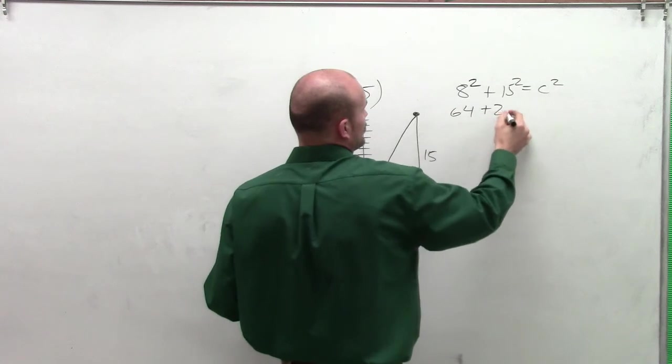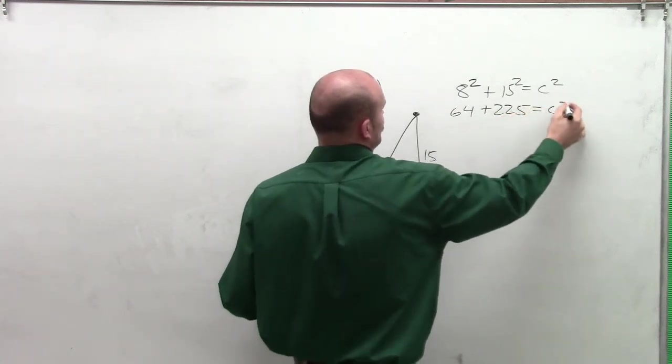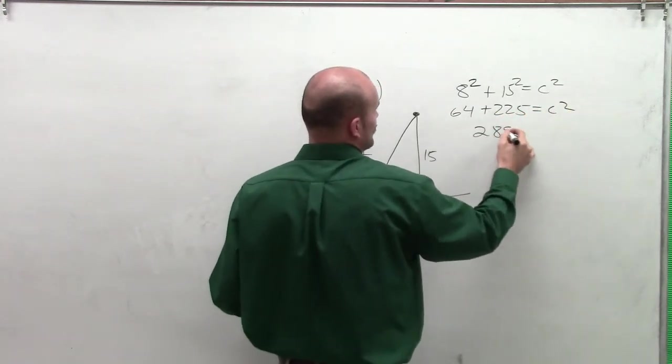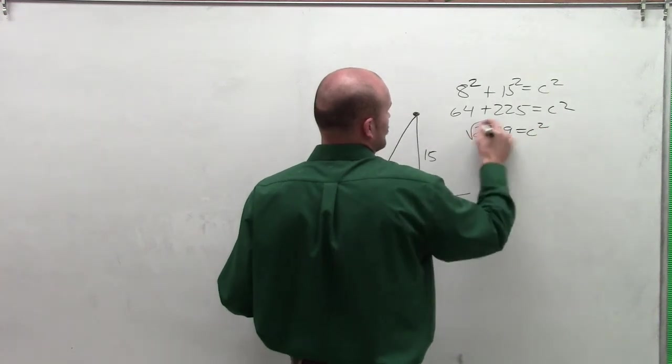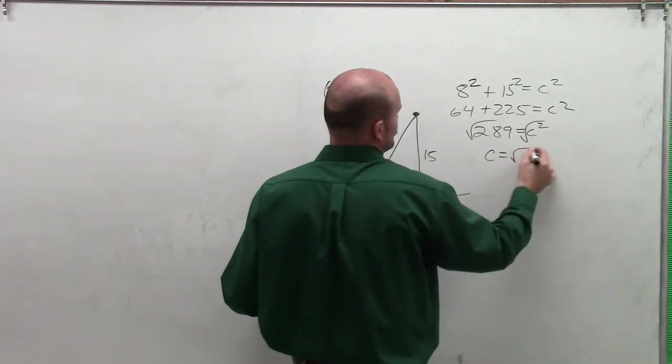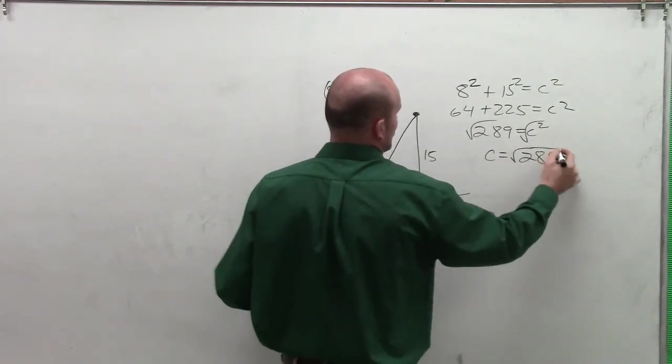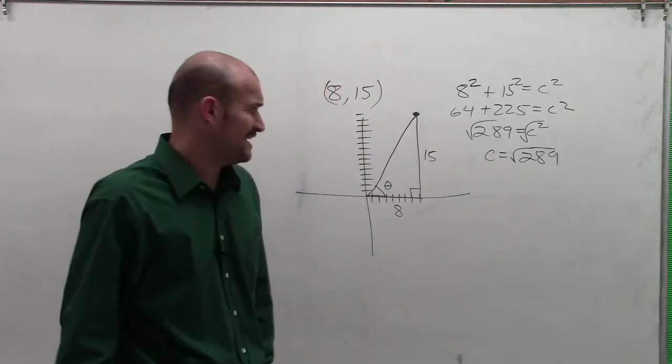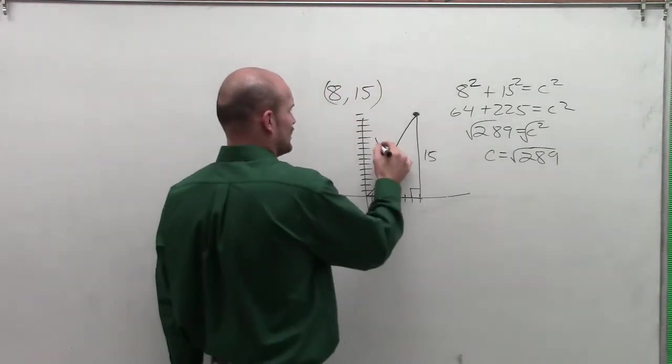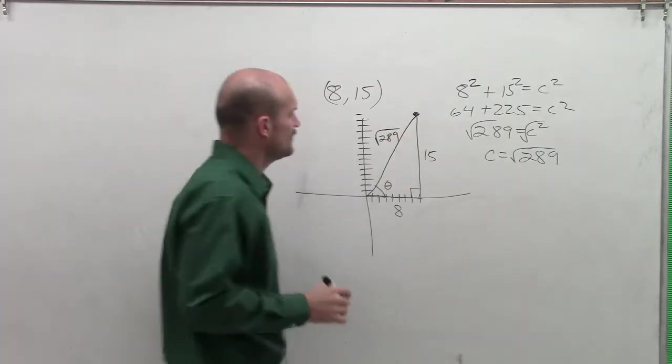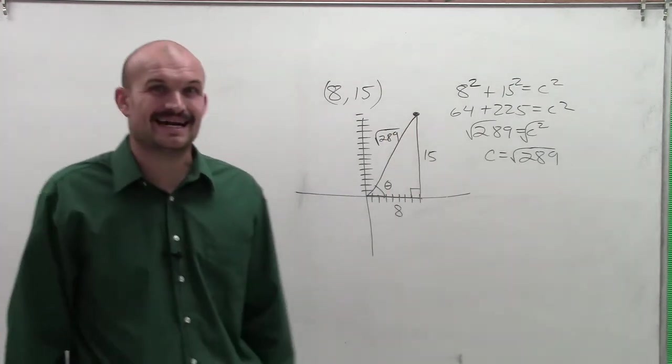So we have 64 plus 225 equals c squared. So we have 289 equals c squared, and we get c equals the square root of 289. Doing a little quick math in my head, I do not believe that could be reduced, but I could be wrong. I'm going to leave it as the square root of 289.